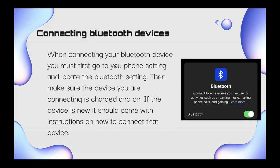When connecting your Bluetooth device, you must first go to your phone settings and locate the Bluetooth setting. Make sure the device you're connecting is charged and on. As the device is new, it should come with instructions on how to connect. This is the Apple Bluetooth tab — if you use Android it may look slightly different, but it always has this Bluetooth symbol. When you see this sign, you know Bluetooth is on. A speaker you buy will probably also have a button with this symbol to connect.